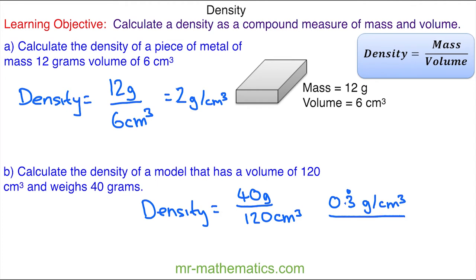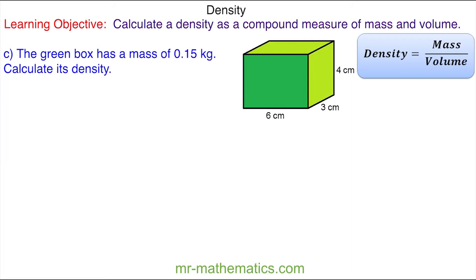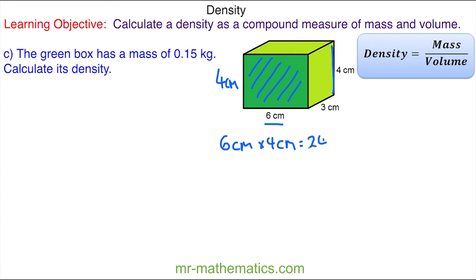Let's try some more questions. Work out the density of this cube using the formula: mass divided by volume. You can pause the video and resume when you're ready. To begin, we need to work out the volume of the cuboid. The area of this face is 6 centimeters multiplied by the height of 4 centimeters, giving 24 centimeters squared. Multiplying by the depth of 3 centimeters gives a volume of 72 centimeters cubed.